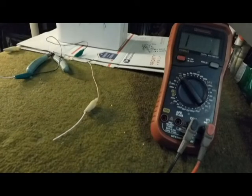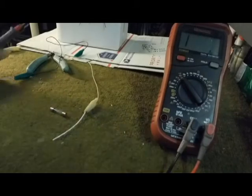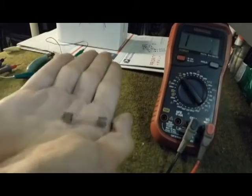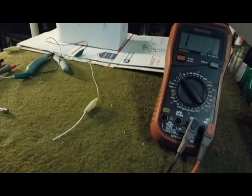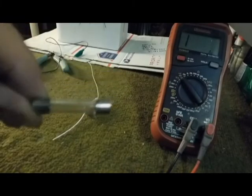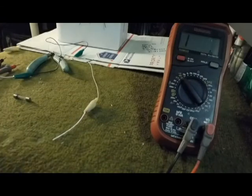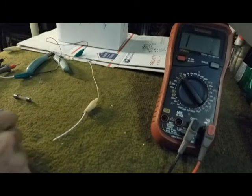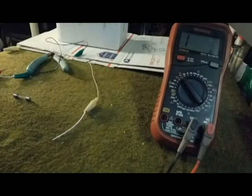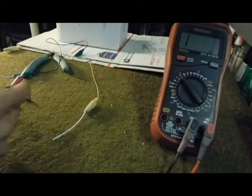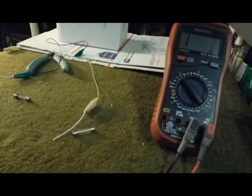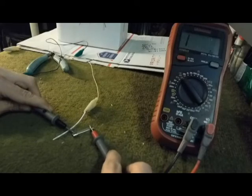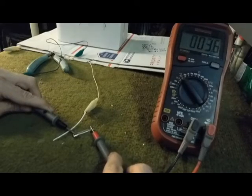Now to do with fuses, it's the exact same thing. You got two different types: you have fast blow fuses, which is basically a fuse with a super small wire inside of it, and then you have slow blow fuses, which the filament inside is much thicker. It's the same thing. If the fuse is good, you'll get a reading.